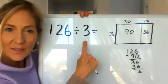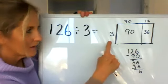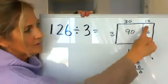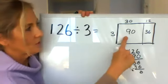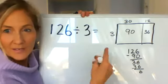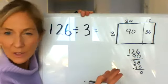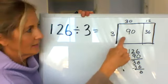126 divided by 3. We're used to making a nice area model, knowing our total amount is going to be 126. That's our goal number. And we'll break it down. Three groups of what gets me close to this number. Three groups of 30 got me 90.